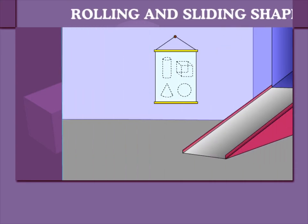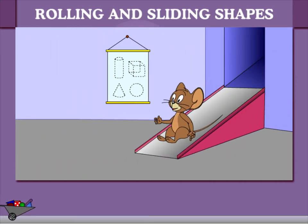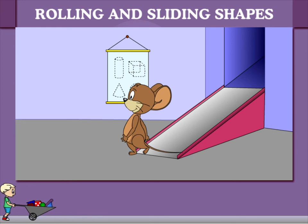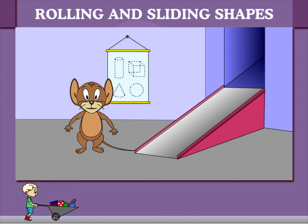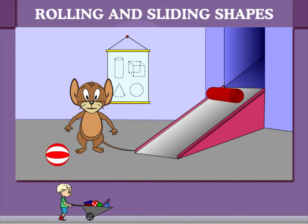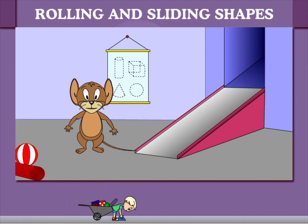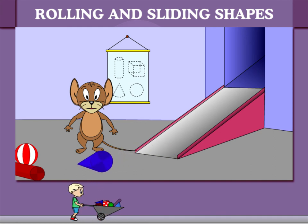Rolling and Sliding Shapes. Here is Robby Mouse again. He slides out of his home through a chute. Down rolls a ball and a cylinder. Here rolls a cone down the chute.